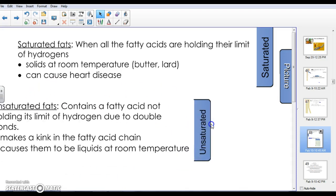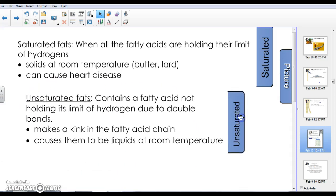We also have unsaturated fats. Just like the name suggests, it's when you don't have the limit of hydrogen on your fatty acid chains. This can occur because you can have double bonds with the carbon skeleton taking the place of hydrogens. This causes a kink in the structure of the fatty acid and allows them to be liquids at room temperature.